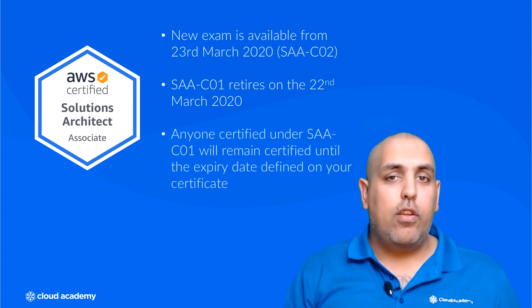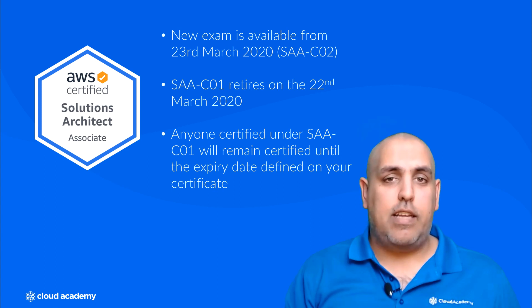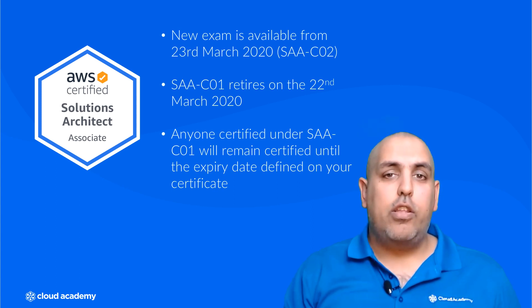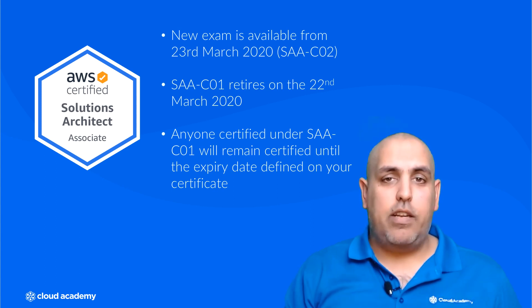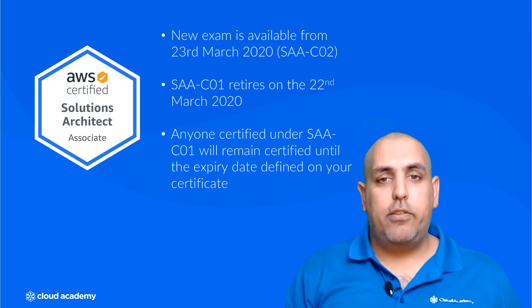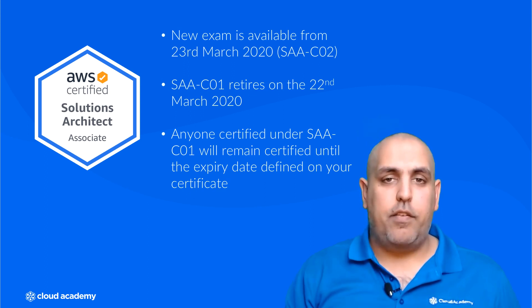However, those of you who have already passed your certification under SAA-C01, you will still be certified as an AWS Solutions Architect Associate until your expiry date defined on your certificate.